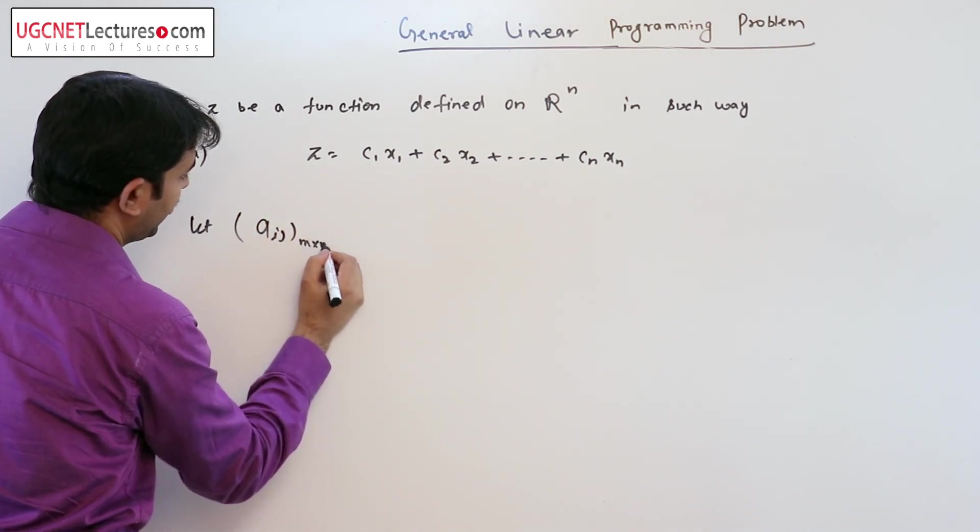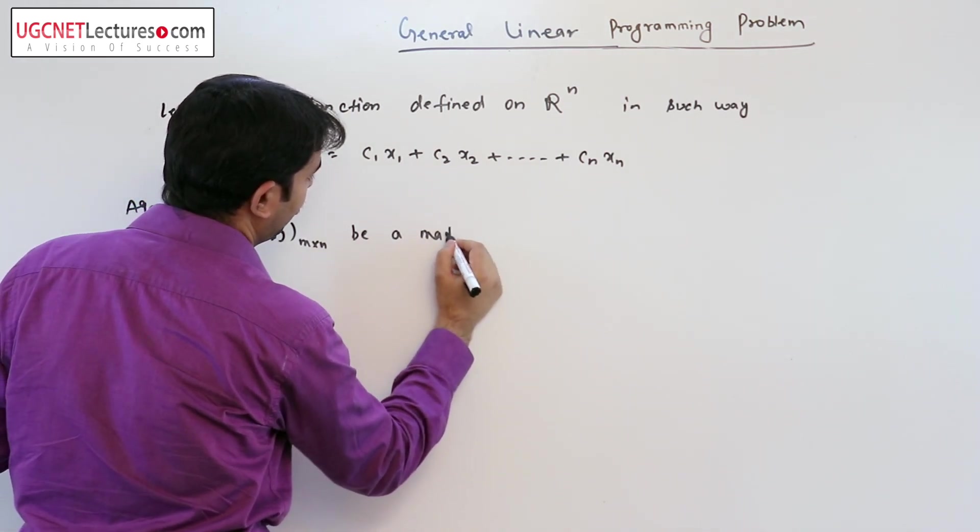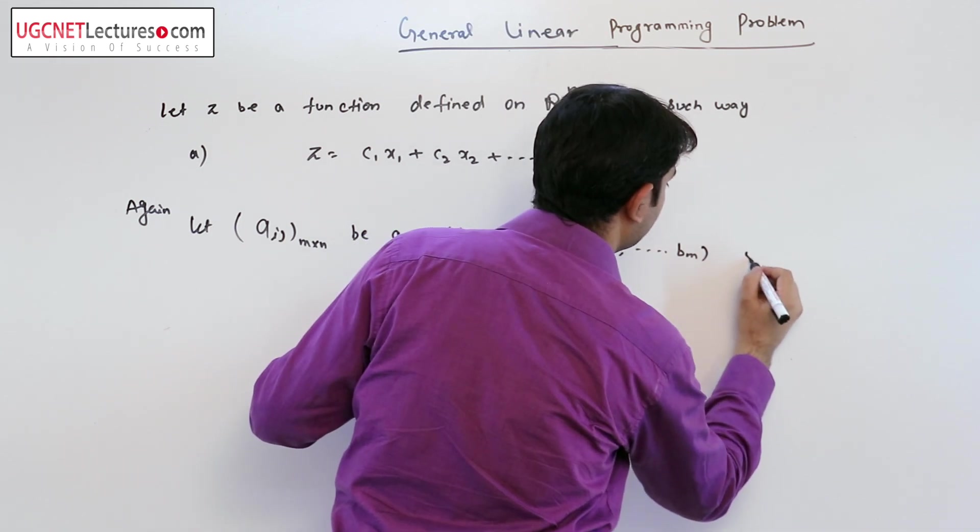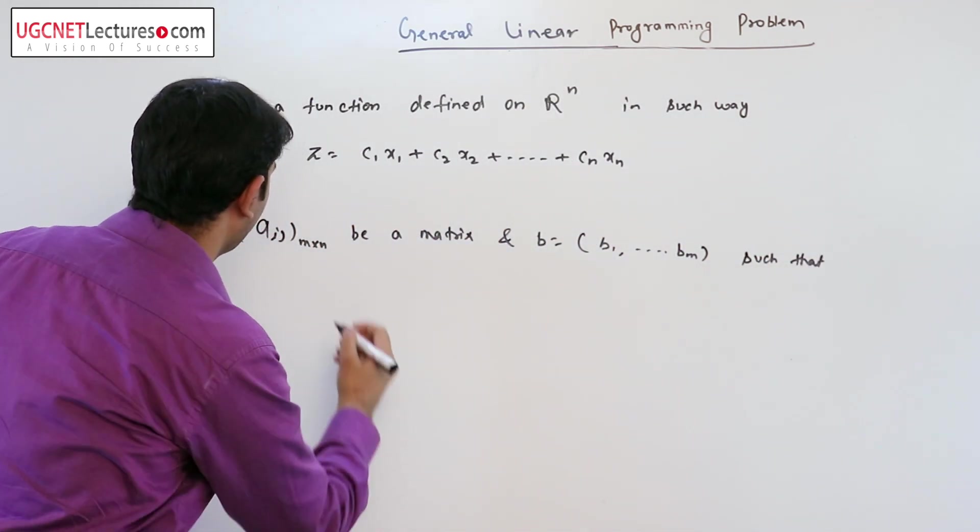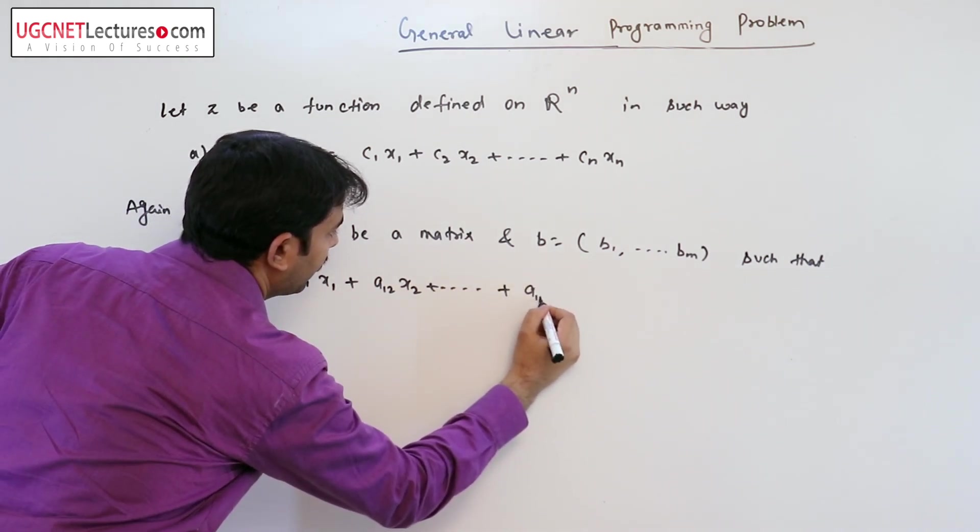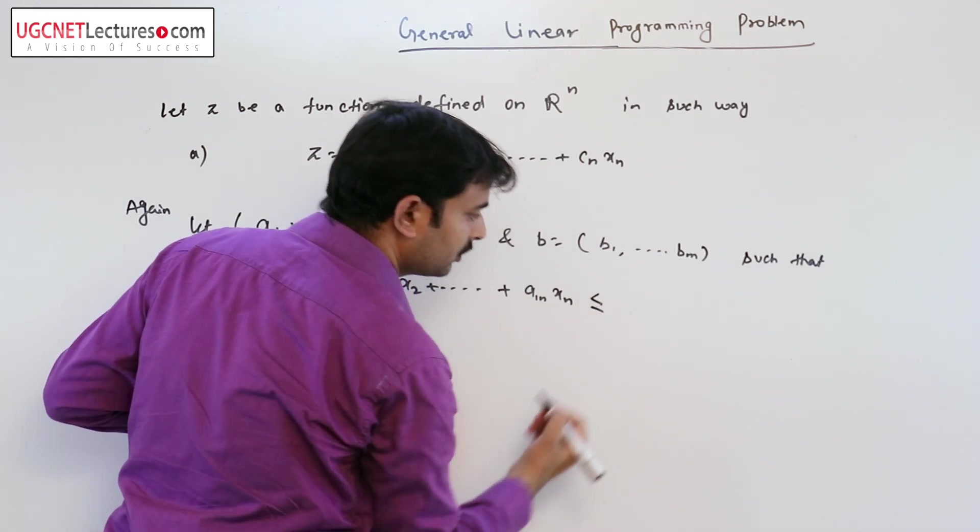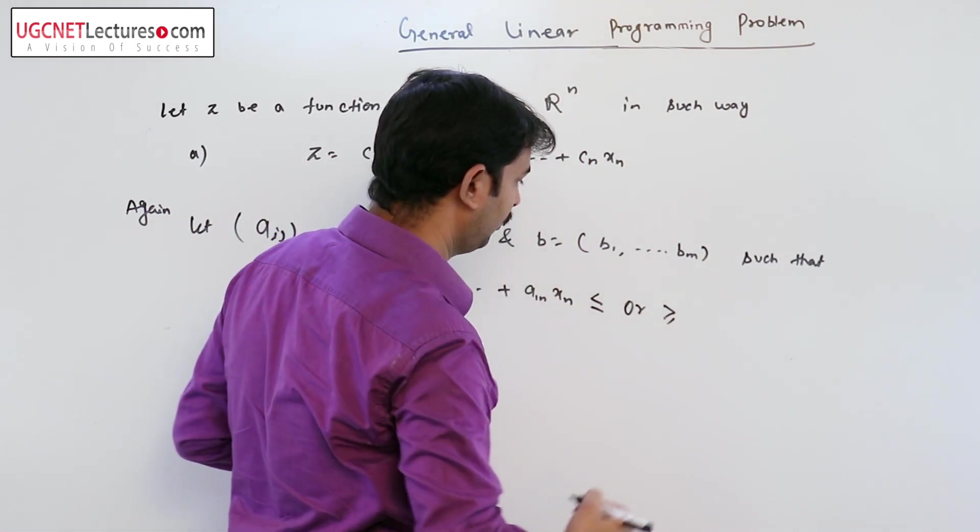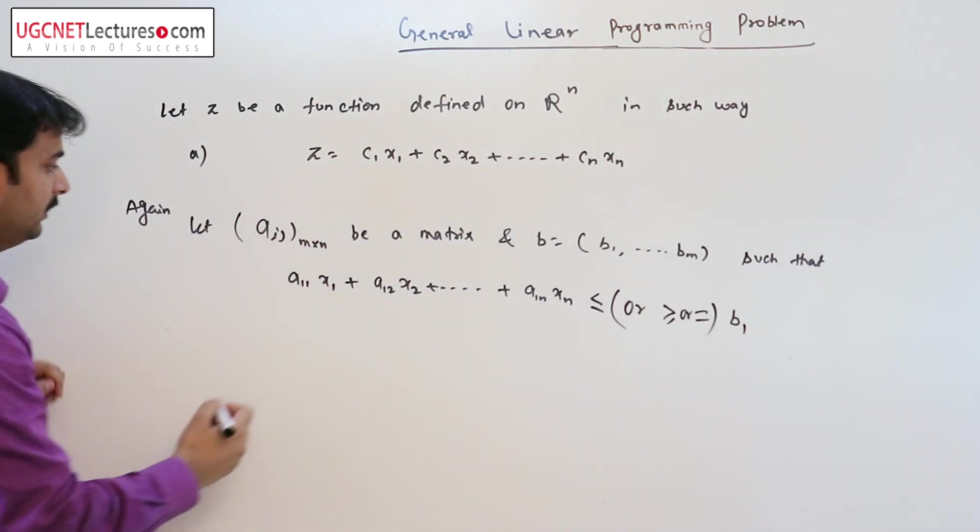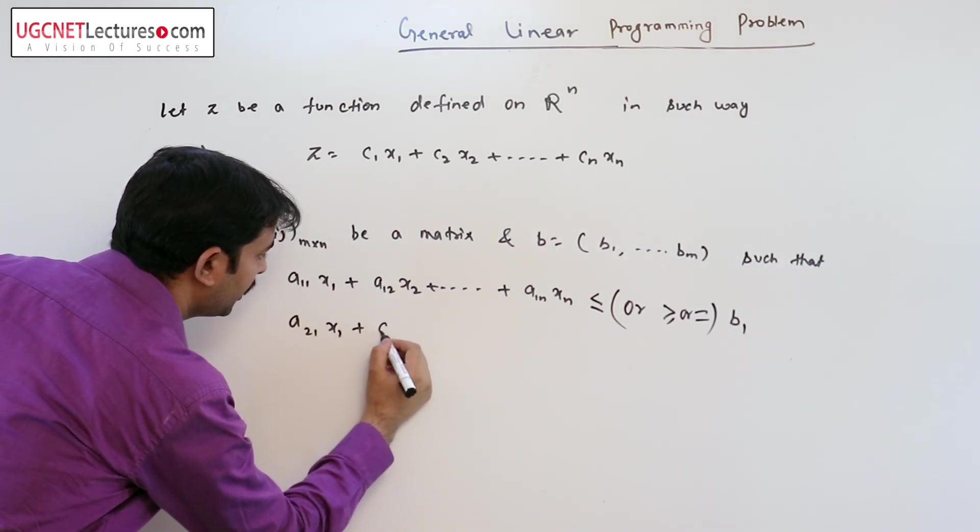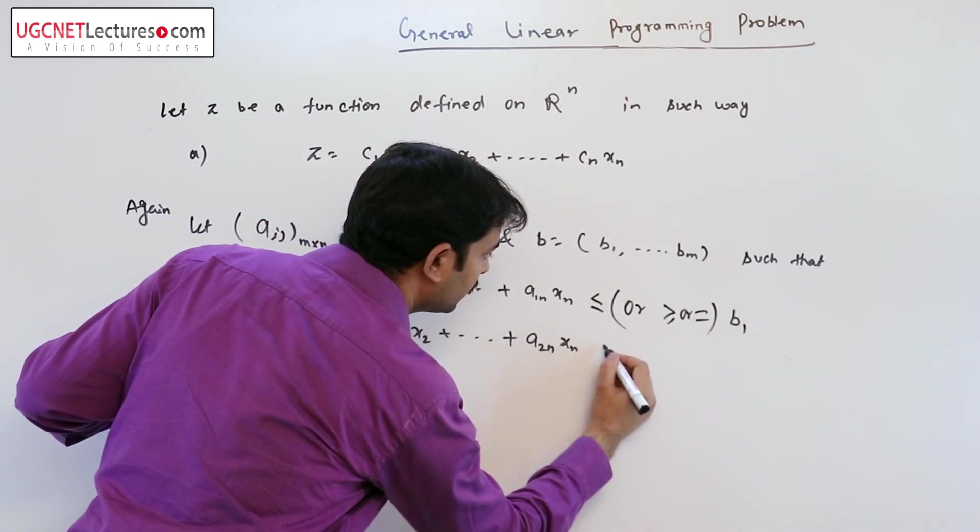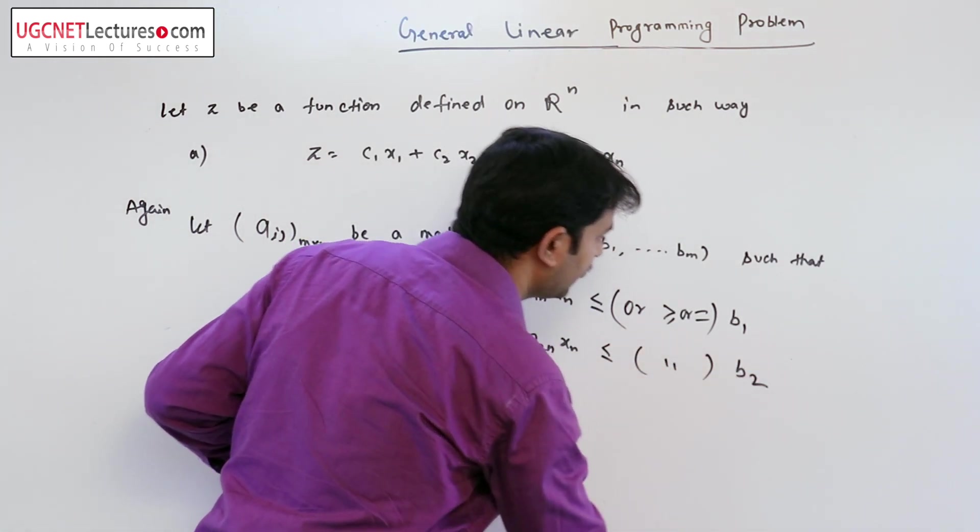Let aᵢⱼ be a matrix of m cross n and b such that a₁₁x₁ plus a₁₂x₂ plus ... plus a₁ₙxₙ is less than equal to or greater than equal to or equal to b₁. Second, a₂₁x₁ plus a₂₂x₂ is less than equal to or greater than equal to or equal to b₂.